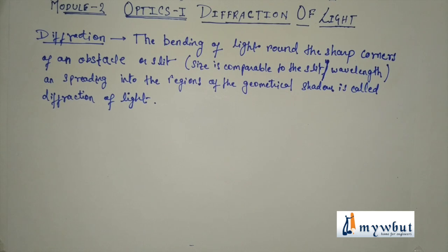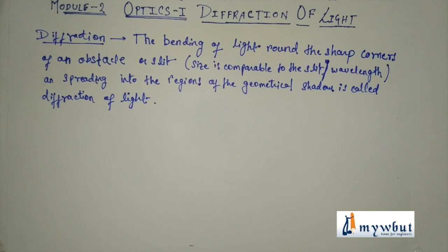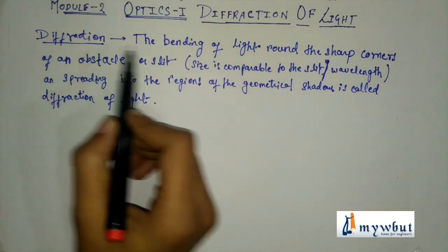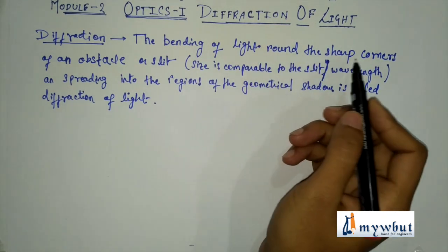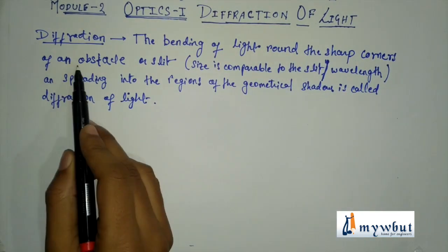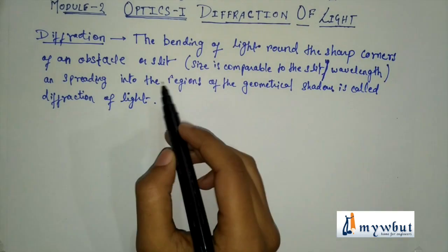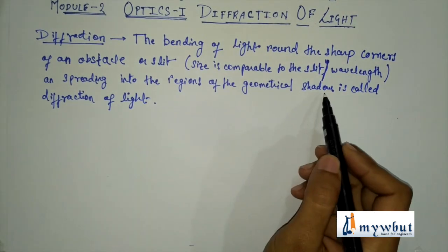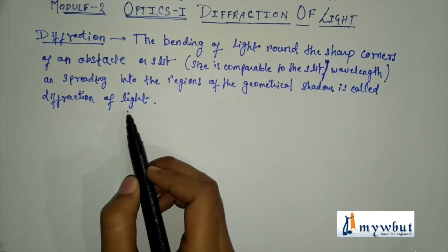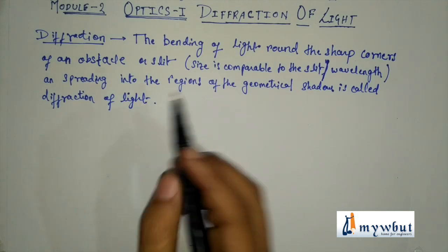Today we are going to start the new topic of optics from module 2, that is diffraction of light. So first let us understand the definition of diffraction. Diffraction is the bending of light round the sharp corners of an obstacle or slit, spreading into the regions of the geometrical shadow — this is known as diffraction of light.